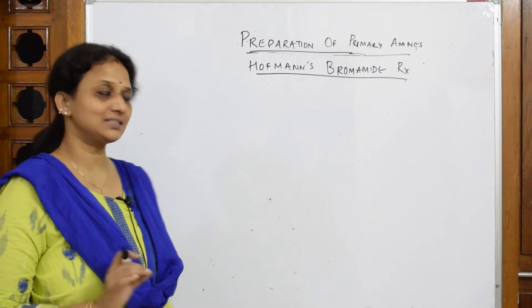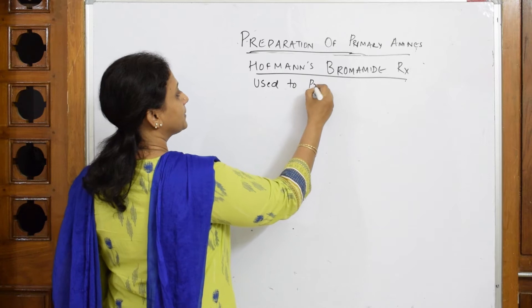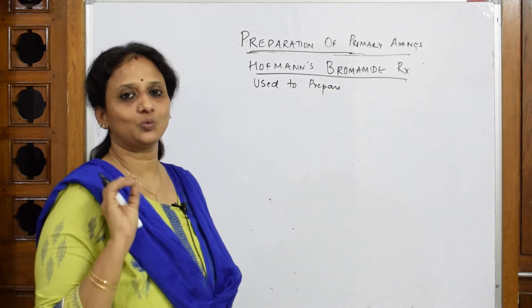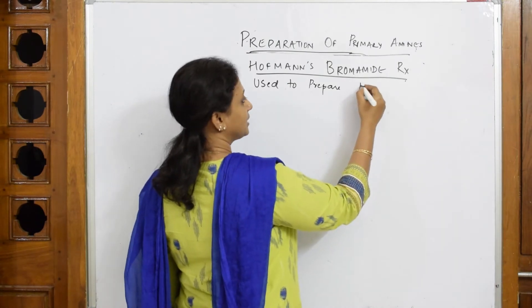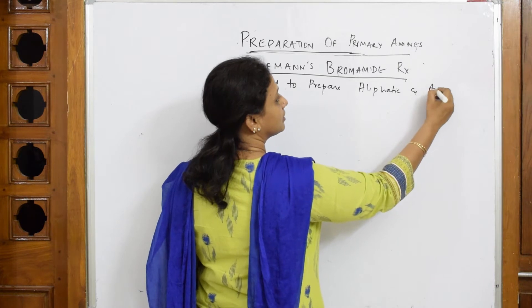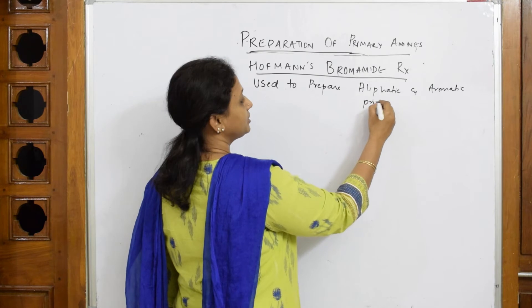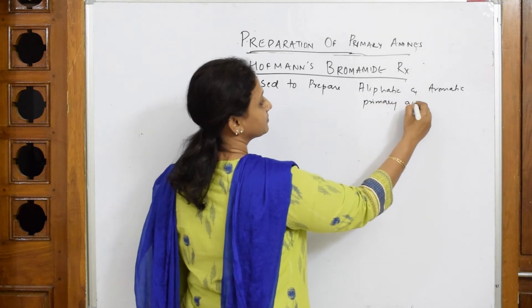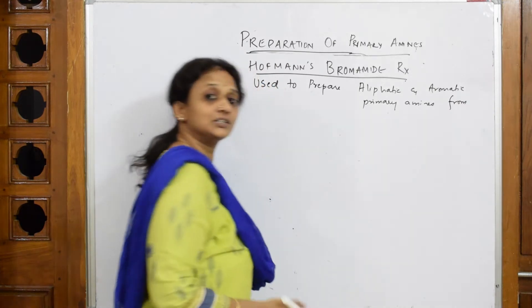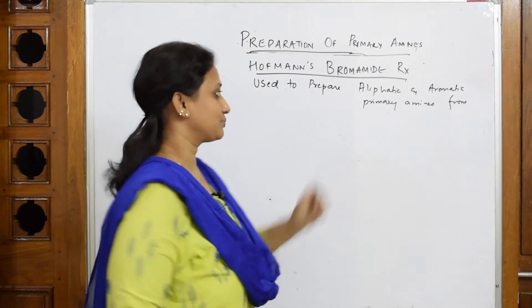Hoffmann's Bromamide synthesis is used to prepare - remember this line please, you will get one mark - used to prepare aliphatic and aromatic primary amines from amides. If you can at least remember till here, from amides, that is important.